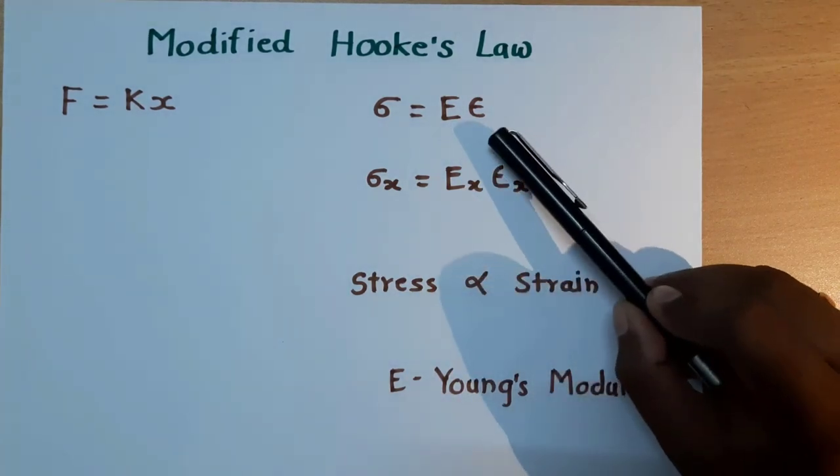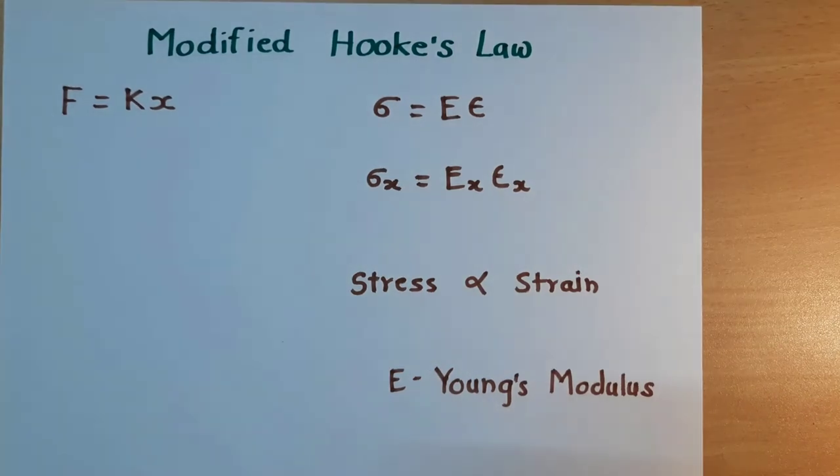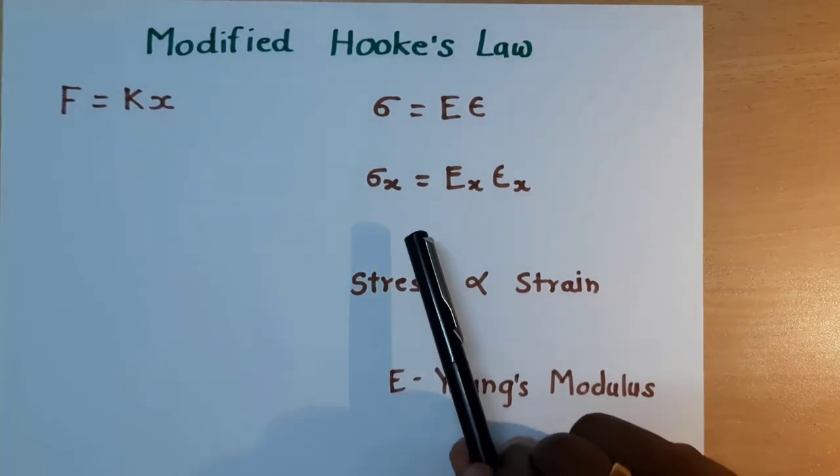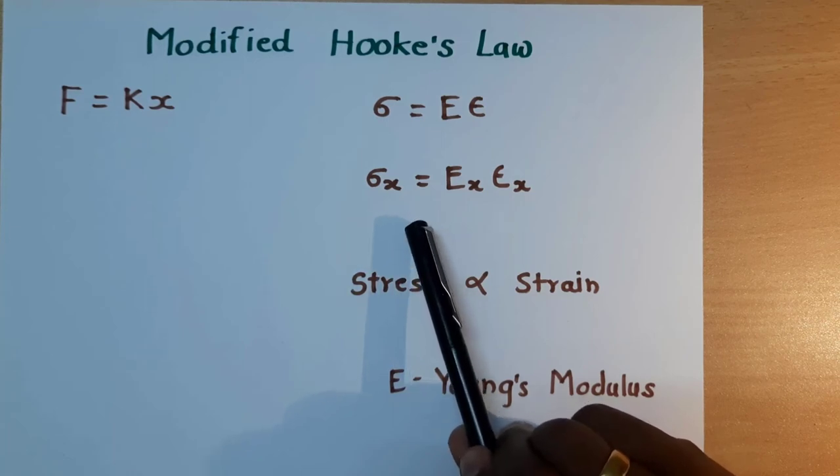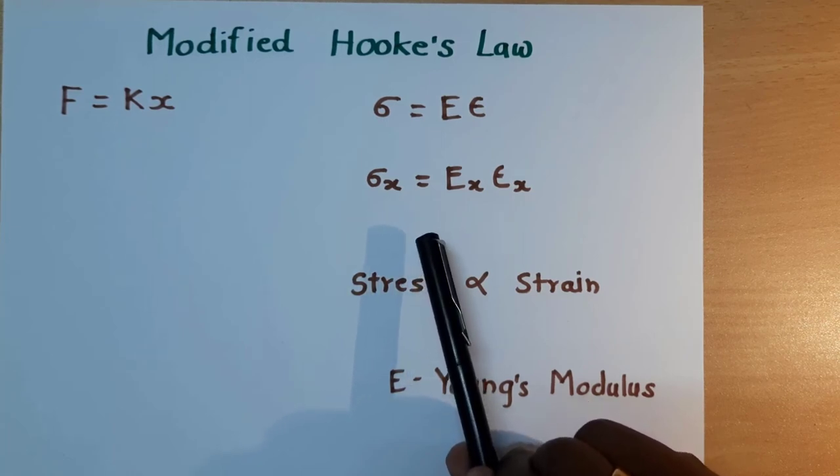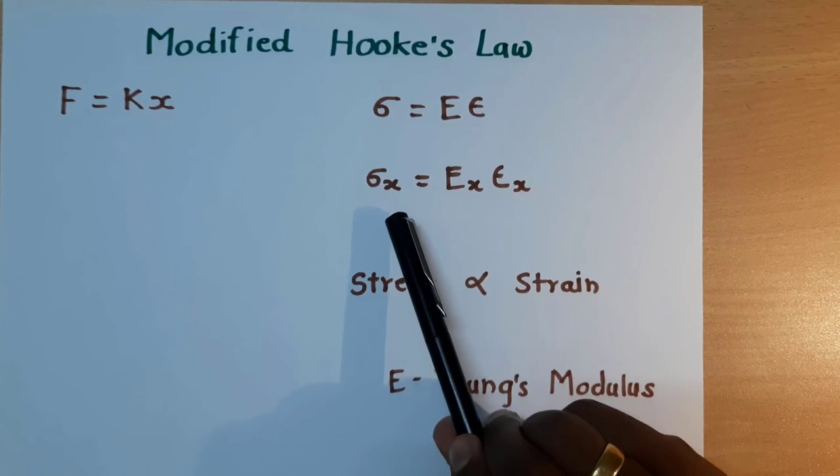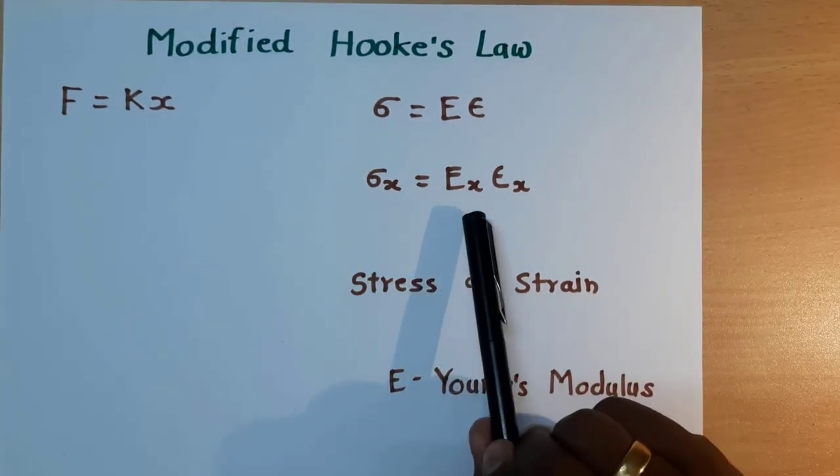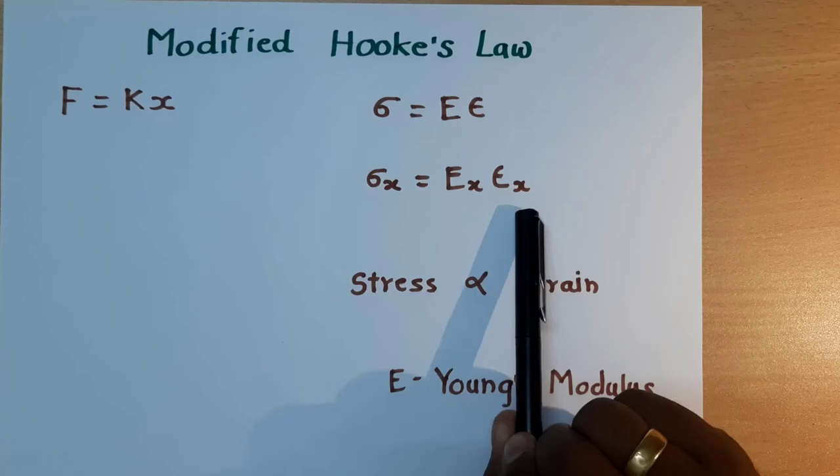Now this is the generalized equation in which we have considered these terms. If we consider 3D body, there will be three axes X, Y and Z. I have taken one example in the X direction. If you want to write the Hooke's law in the X direction, we can write it like this: Sigma X is equal to EX into Epsilon X.